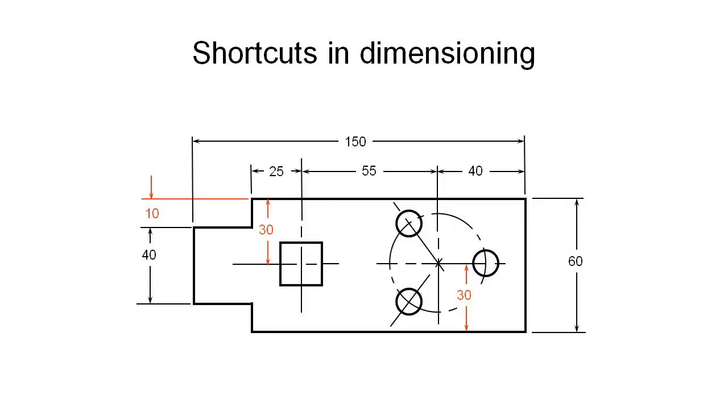The first shortcut that I'll explain is how to use symmetry lines to minimize the number of dimensions that you have on your drawings. So the center lines, these dashed lines that we see here and here, can be used to imply symmetry between features.